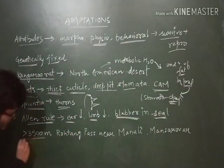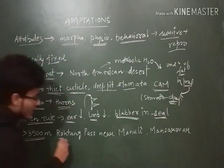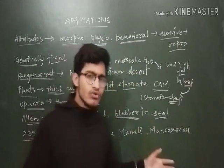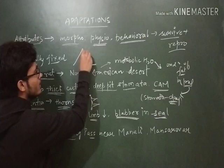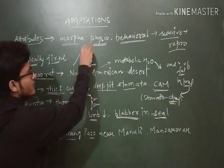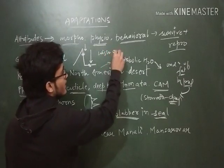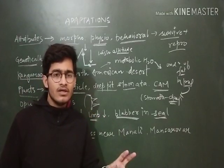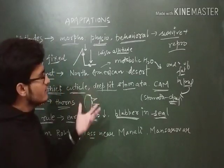At very high altitudes — more than 3500 meters, like Darwa Pass near Manali or Mansarovar near the Tibetan area — the atmospheric pressure is quite low. At the plains the atmospheric pressure is high; at high altitudes it is low. Due to that low atmospheric pressure, oxygen availability is also quite low, and due to that low oxygen some people get nausea, heart palpitations, and feel quite sick — that is basically altitude sickness.